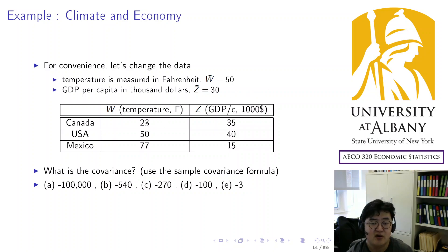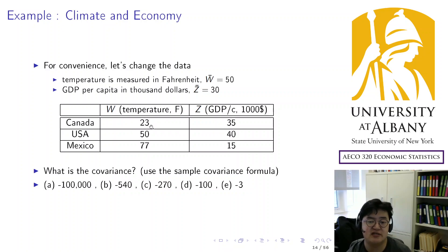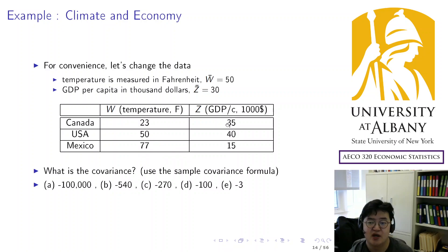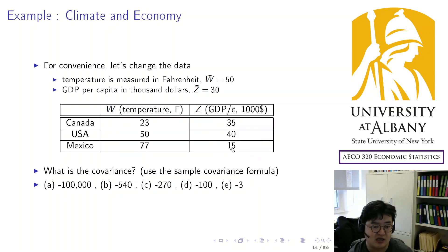The observations change like this. Canada was minus five degrees Celsius; after transformation it becomes 23 degrees Fahrenheit. USA: 10 degrees Celsius becomes 50 degrees Fahrenheit. Mexico: 25 Celsius becomes 77 Fahrenheit. For GDP per capita, I simply dropped three zeros: 35,000 becomes 35, 40,000 becomes 40, and 15,000 becomes 15.